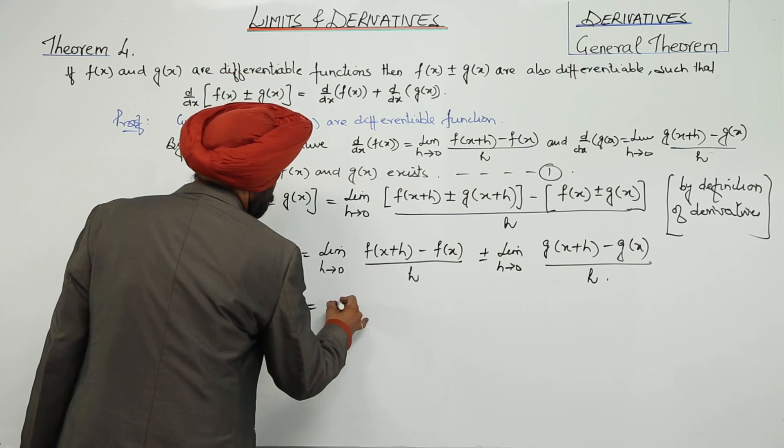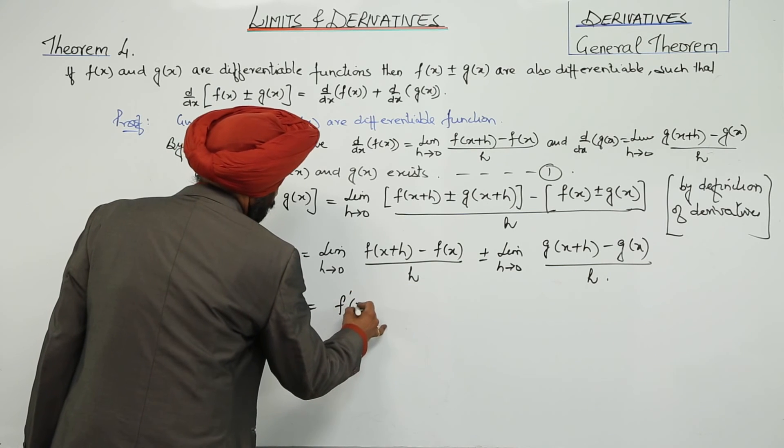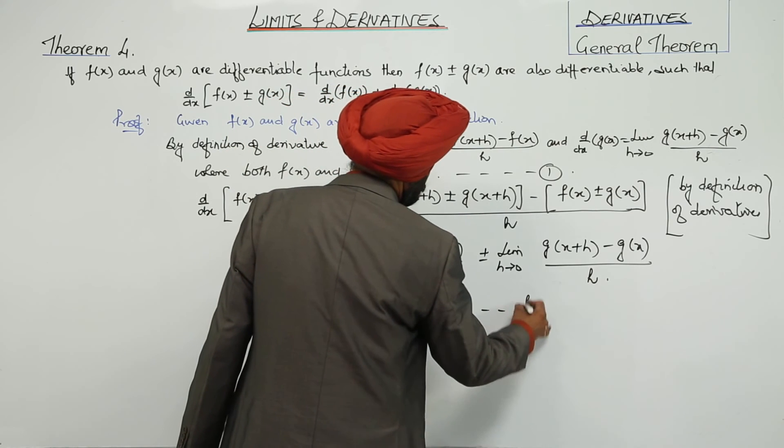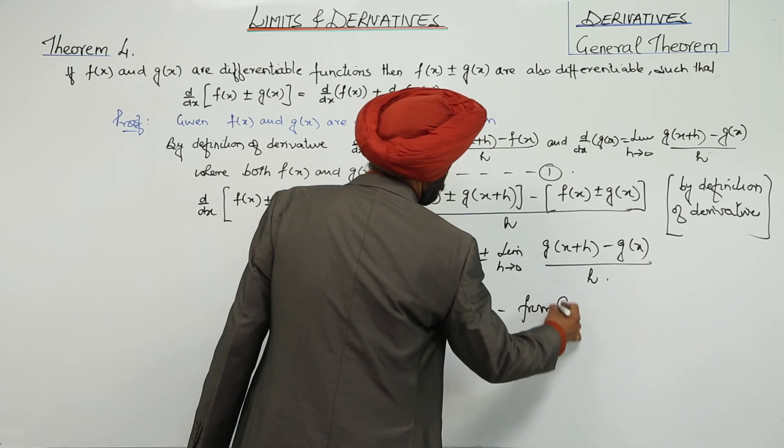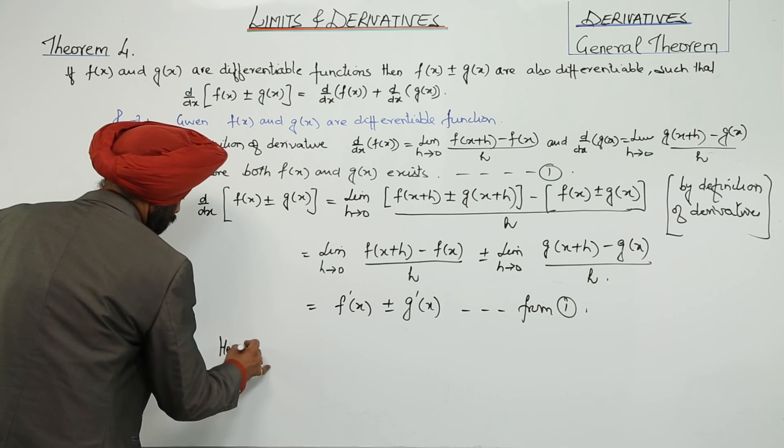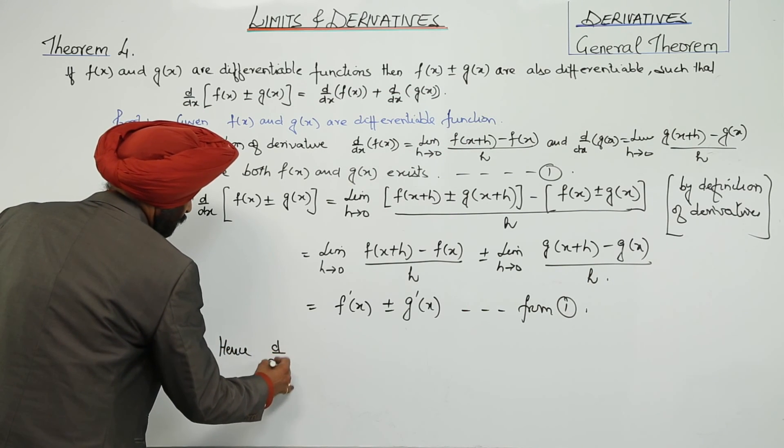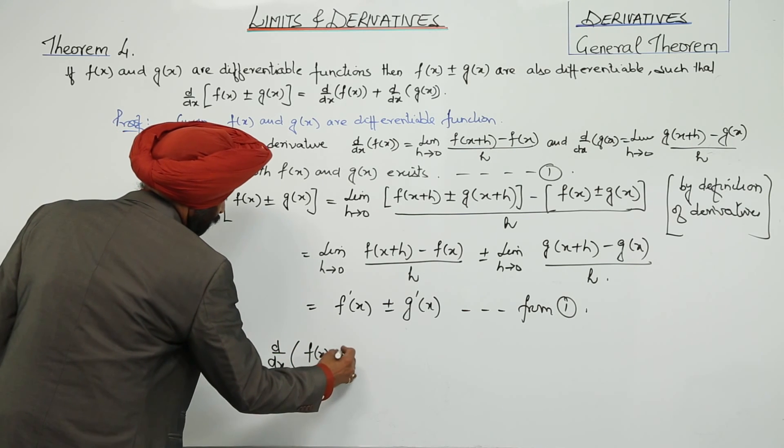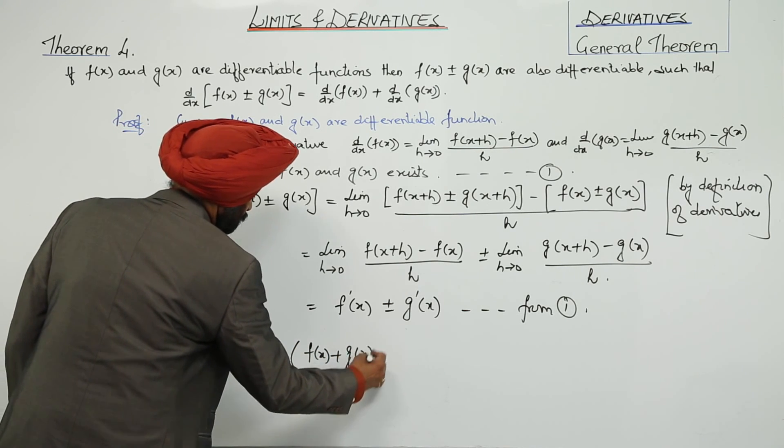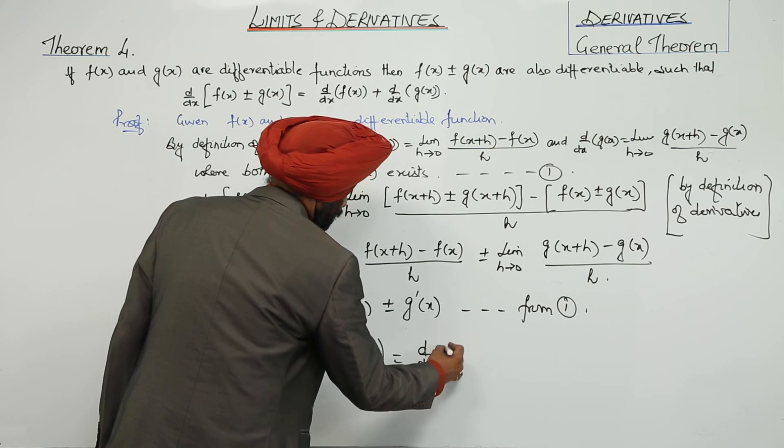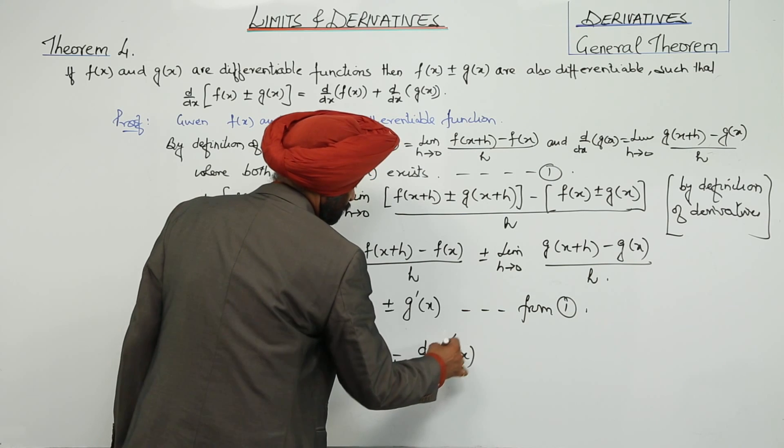This equals f'(x) ± g'(x) from equation 1. Hence, d/dx of [f(x) ± g(x)] equals d/dx of f(x)